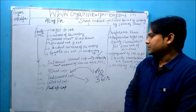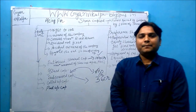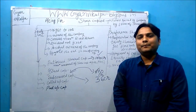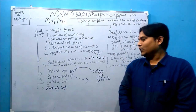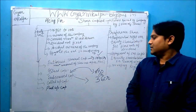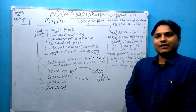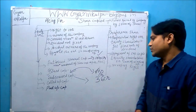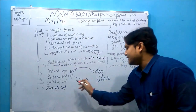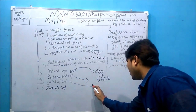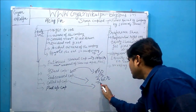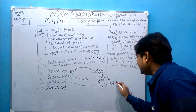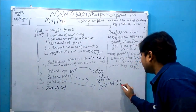Called up capital is that part of subscribed capital which has been called up by the company for making payment by the equity shareholders, or those to whom the shares have been allotted. For example, the company has made a call up to 30 crore — or it can be even 36 crore.